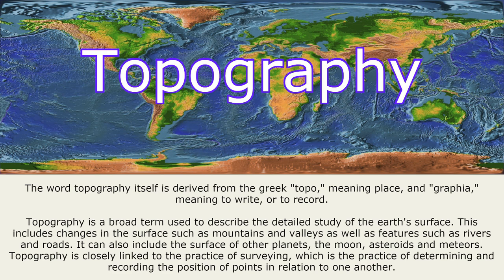Topography is a broad term used to describe the detailed study of the earth's surface. This includes changes in the surface such as mountains and valleys, as well as features such as rivers and roads.